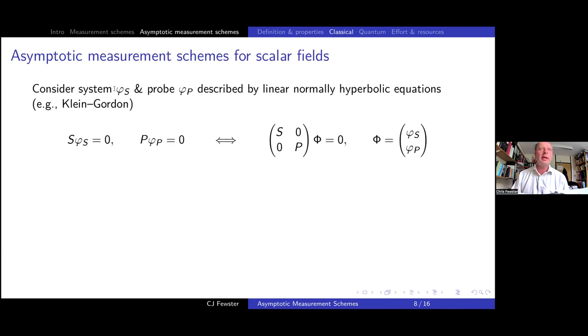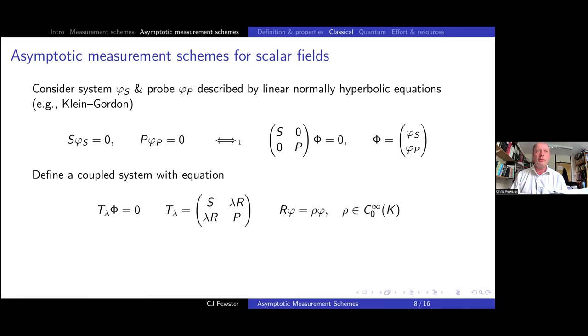Putting it together, if we have a hermitian operator A with an AMS, then we can form this obvious trivial combination and get a hermitian AMS. So importantly, any observable that has an AMS has a hermitian AMS. Now we need to look and see if we can do this for scalar fields. I'm going to consider a system field and a probe field. They're both scalars. The field equations are going to be linear, normally hyperbolic operators. Simplest example being Klein-Gordon, but you can throw in potentials and what have you. So here's a field equation for the system field. There's the field equation for the probe field. Or we can write it in a matrix form where we double up the fields to form a two component field phi.